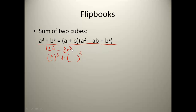Then the 8x³: to get 8, I have to take 2 cubed, and to get x³ I would take x. So now I've got it written out as 5³ + (2x)³. That means 5 is my a and 2x is my b.